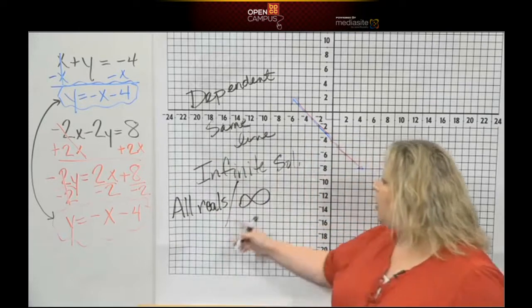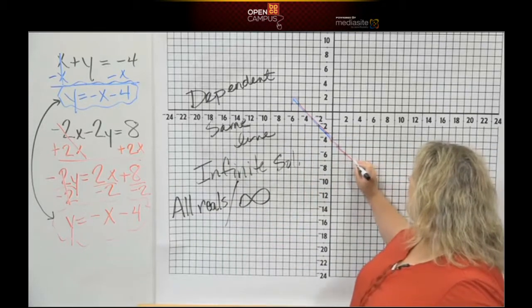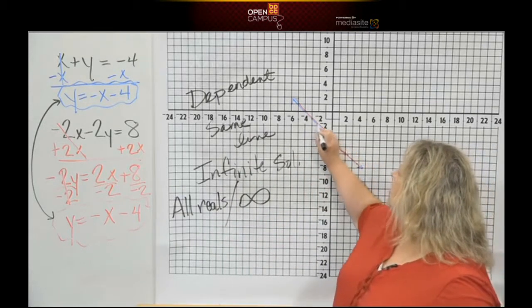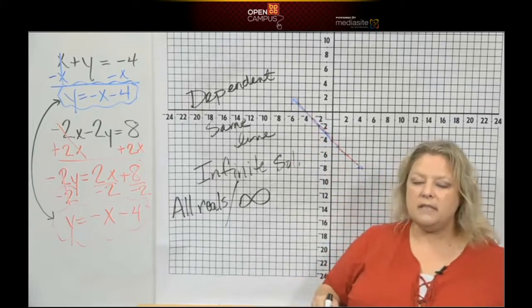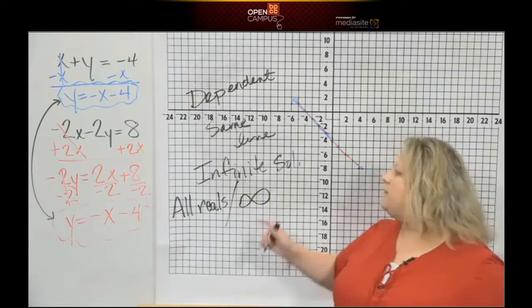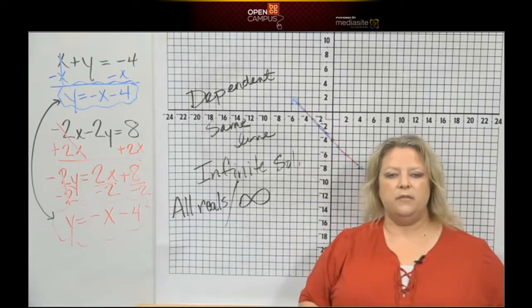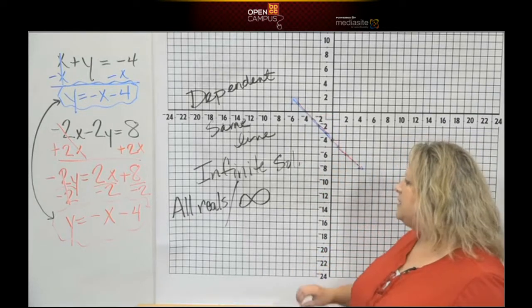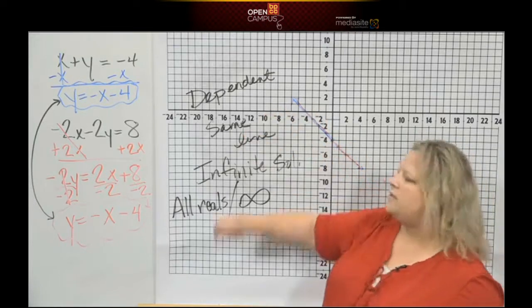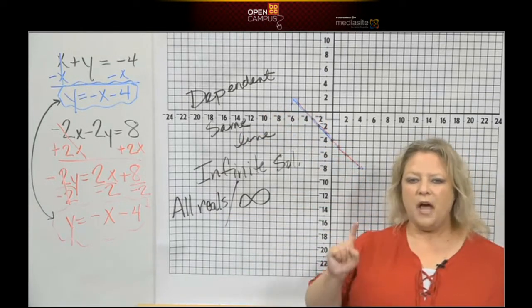That word right there, all reals, means that every number that one line has, the other line has. If this ordered pair falls for that line, it falls for the other line too. That's what infinite means, an infinite number of ordered pairs that they have in common. Not just one.